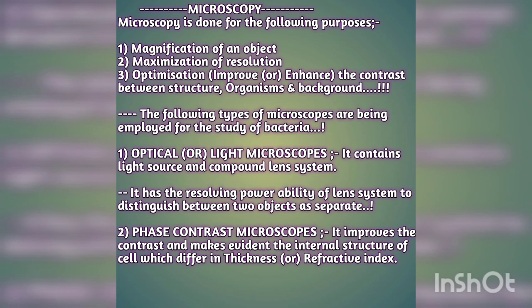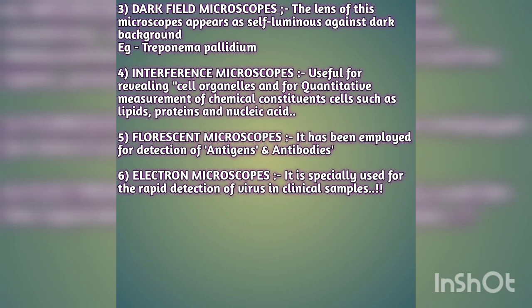The first microscope is the optical or light microscope. It contains a light source and a compound lens system. Its specialty — its resolving power — is the ability of the lens system to distinguish between two objects as separate ones. The second is the phase contrast microscope, which improves contrast and makes evident the internal structure of cells that differ in thickness or refractive index.